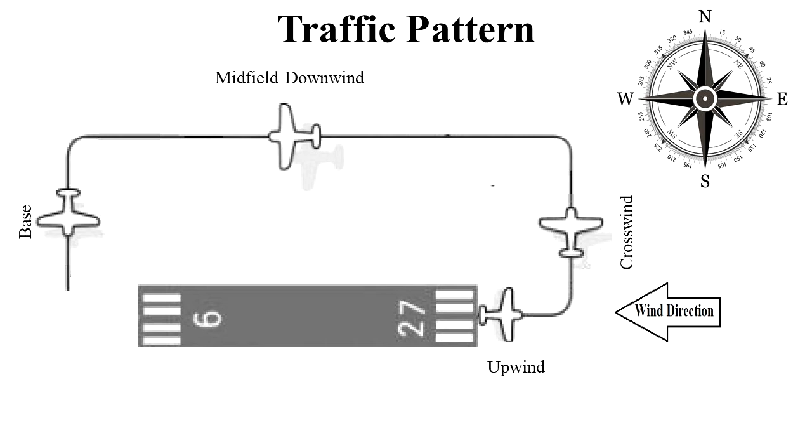When an aircraft turns off its base leg and lines up for a landing, it is considered to be on final approach. So in this example, we'd be in the aircraft lining up for runway 09. Runway 09 would also be considered the approach end of the runway.